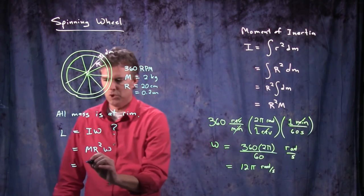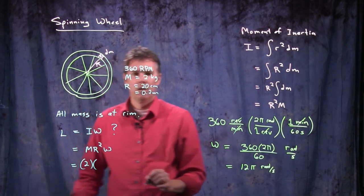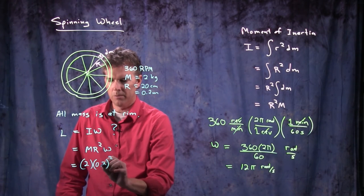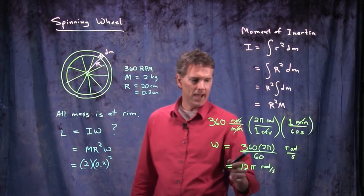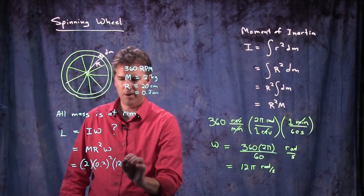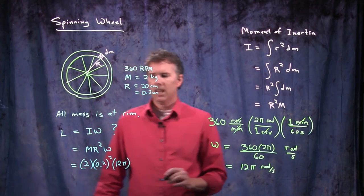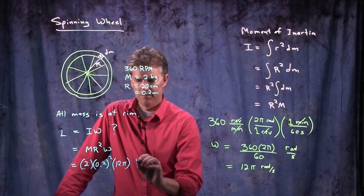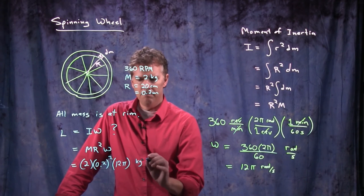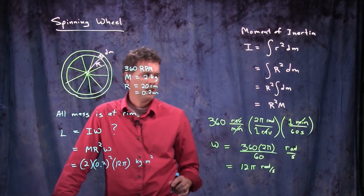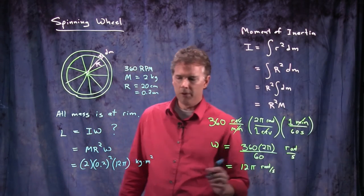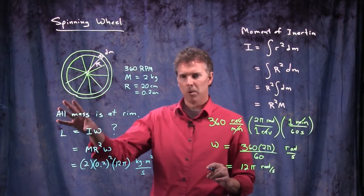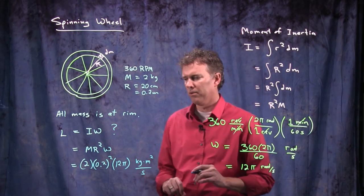So mass of two kilograms. Radius of 0.2. And we got to square that. And then we have an omega of 12 pi. And let's see what the units are on this angular momentum. We had kilogram. Then we had meter squared. Radians is, of course, unitless, but we had seconds in the bottom. So angular momentum has kind of these funky units, kilogram, meter squared per second.